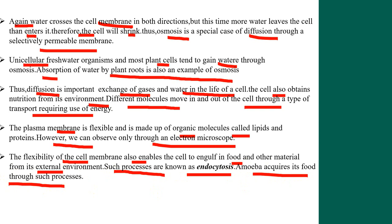The flexibility of the cell membrane enables the cell to engulf food and other material from its external environment. Such a process is known as endocytosis. Amoeba acquires its food through this process. Because the plasma membrane is flexible, it can engulf food and energy sources from the external environment. Amoeba follows the endocytosis process, which is why it can change its shape and size to acquire food.